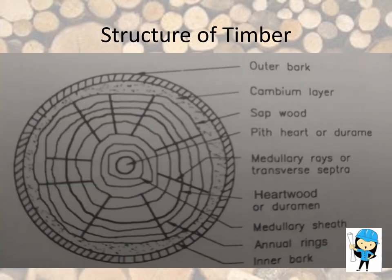Now we are going to see about the structure of timber. First, we are going to see about the bark. Bark is the outermost layer of the timber. There are two types of bark: outer bark and inner bark. Outer bark is used to protect the timber from high temperature and mechanical harm. Inner bark is to protect the cambium layer.